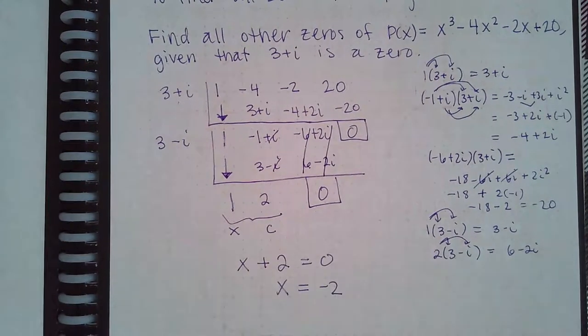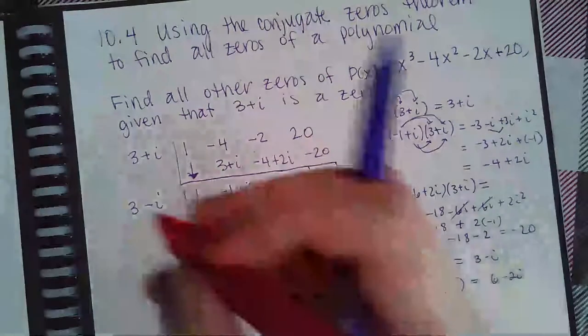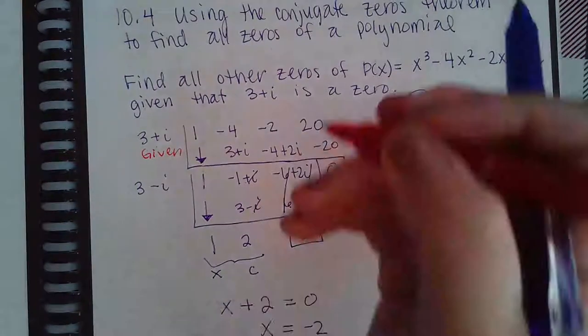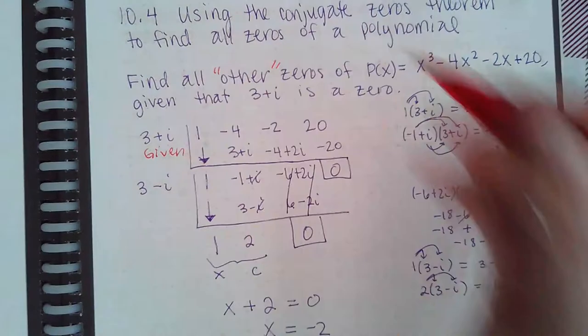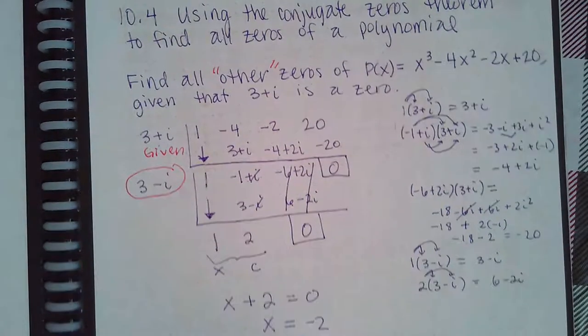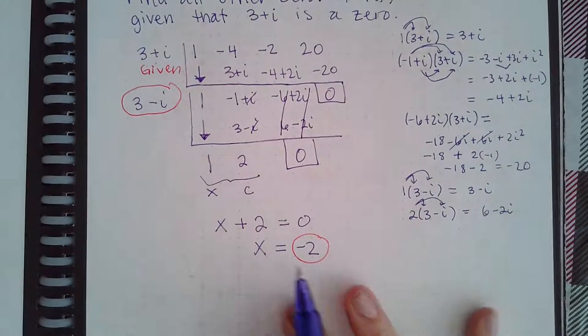When it says find all other zeros, remember you were only given this one - this is the one that was given. So these 'others' that it's talking about is the conjugate of the one given and then the final one that you found at the very end. So for your final answer, it'll be 3 minus i and the negative 2.